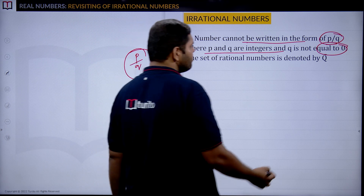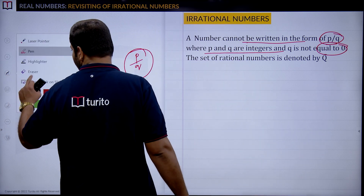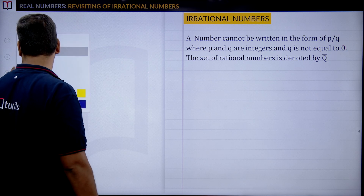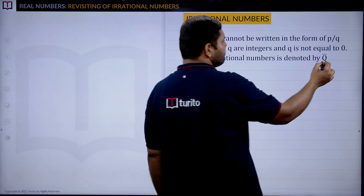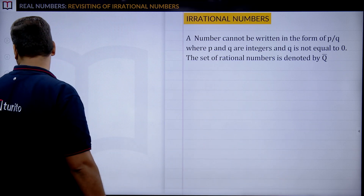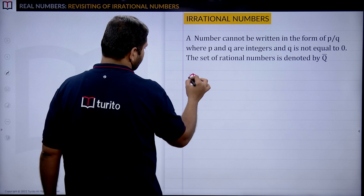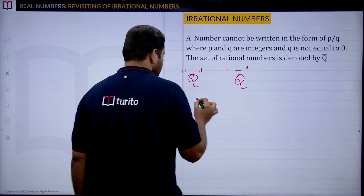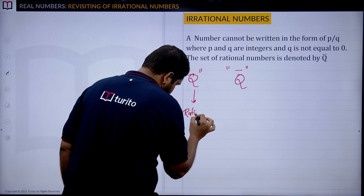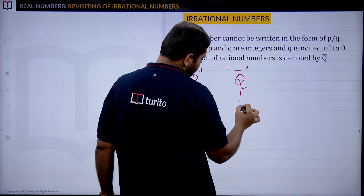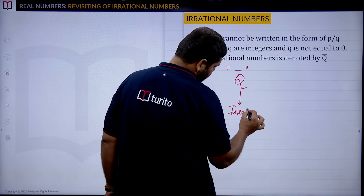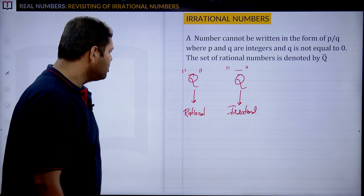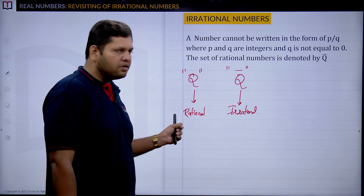Irrational numbers are denoted by the letter Q-bar. So Q-bar represents irrational numbers. Rational numbers are denoted by capital Q, and irrational numbers by Q-bar.